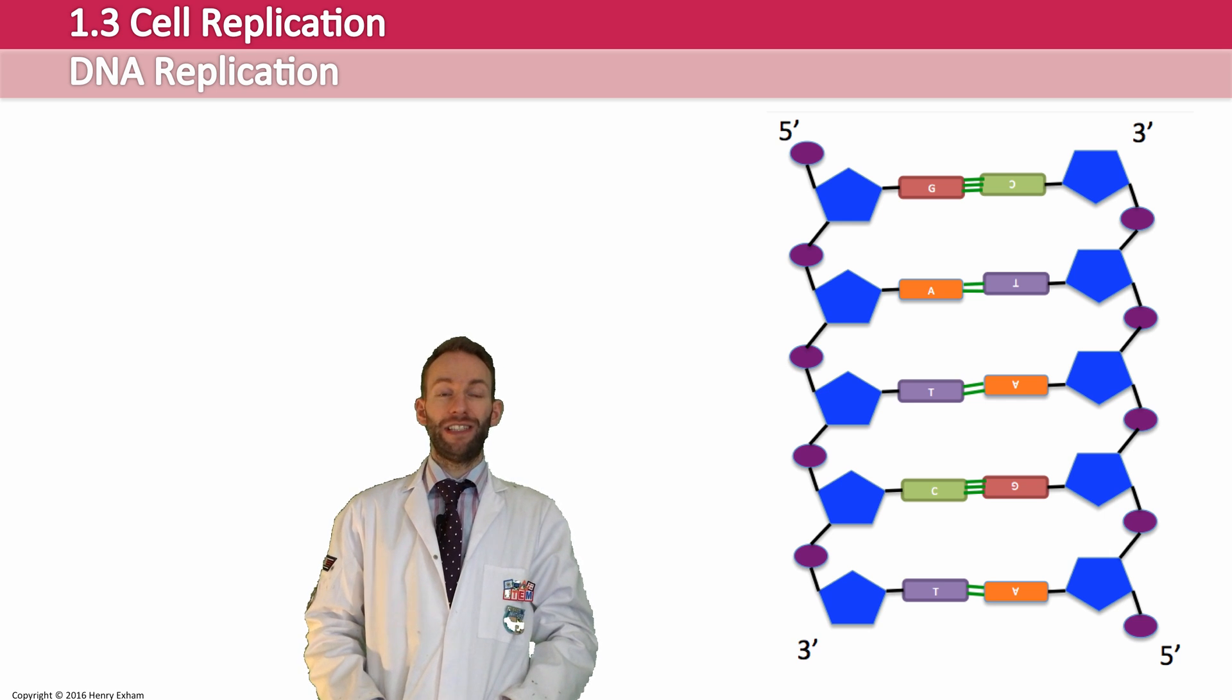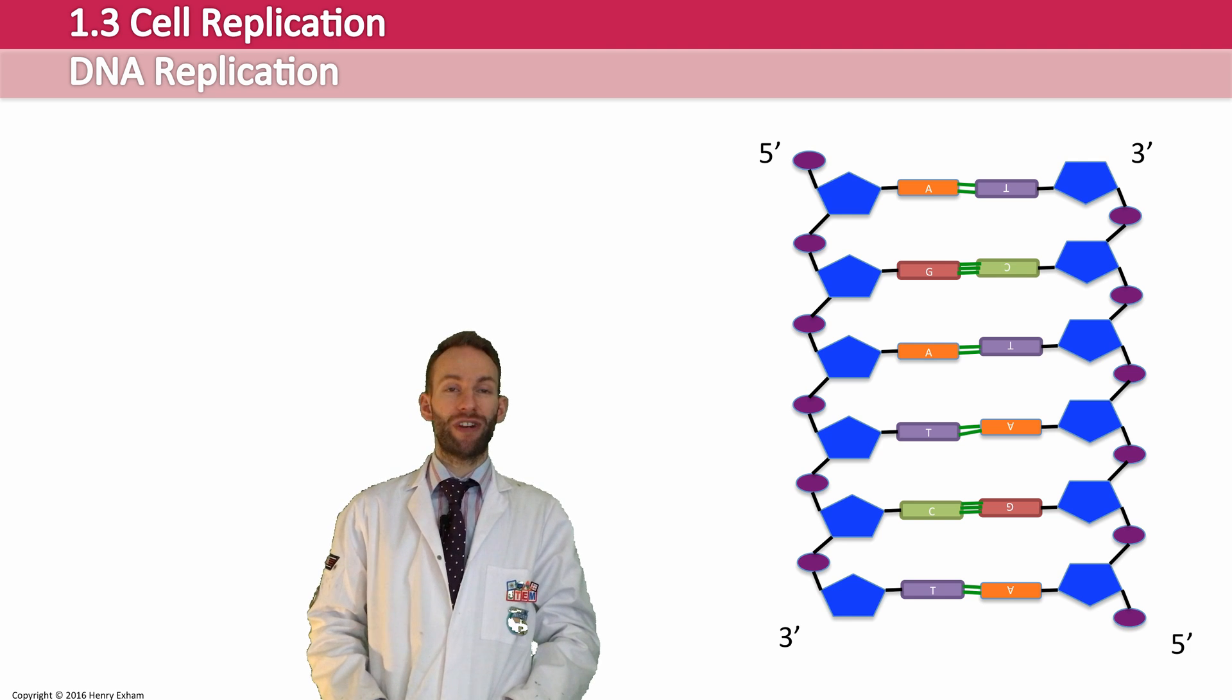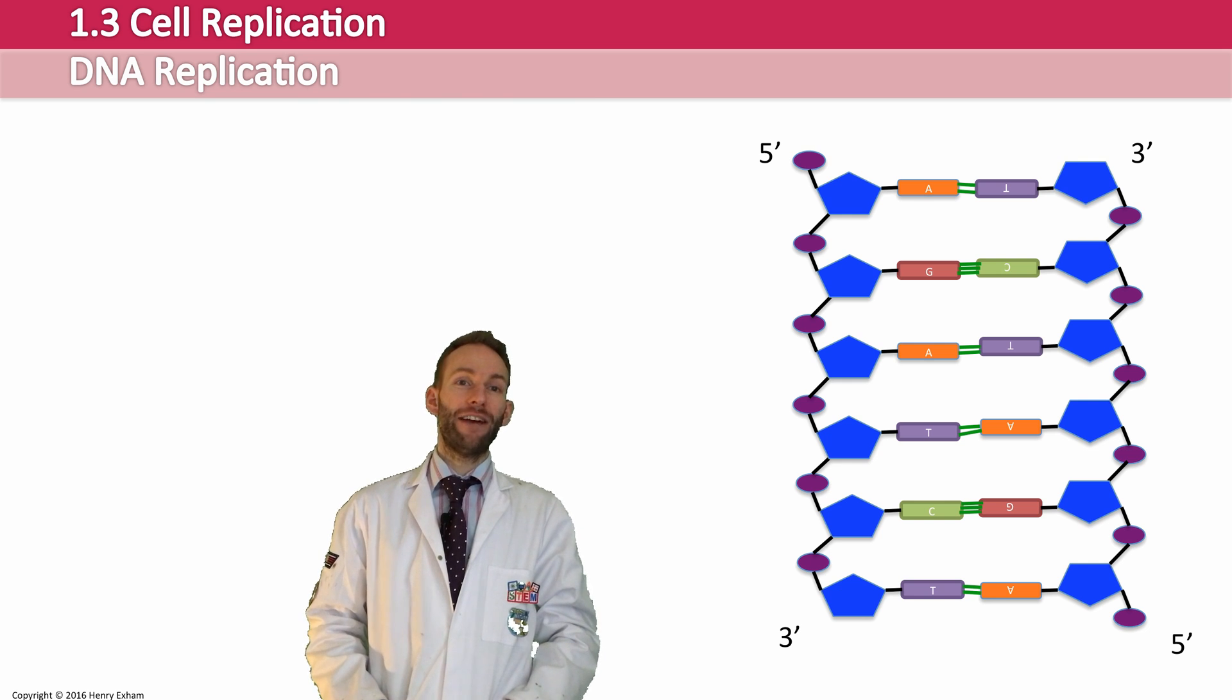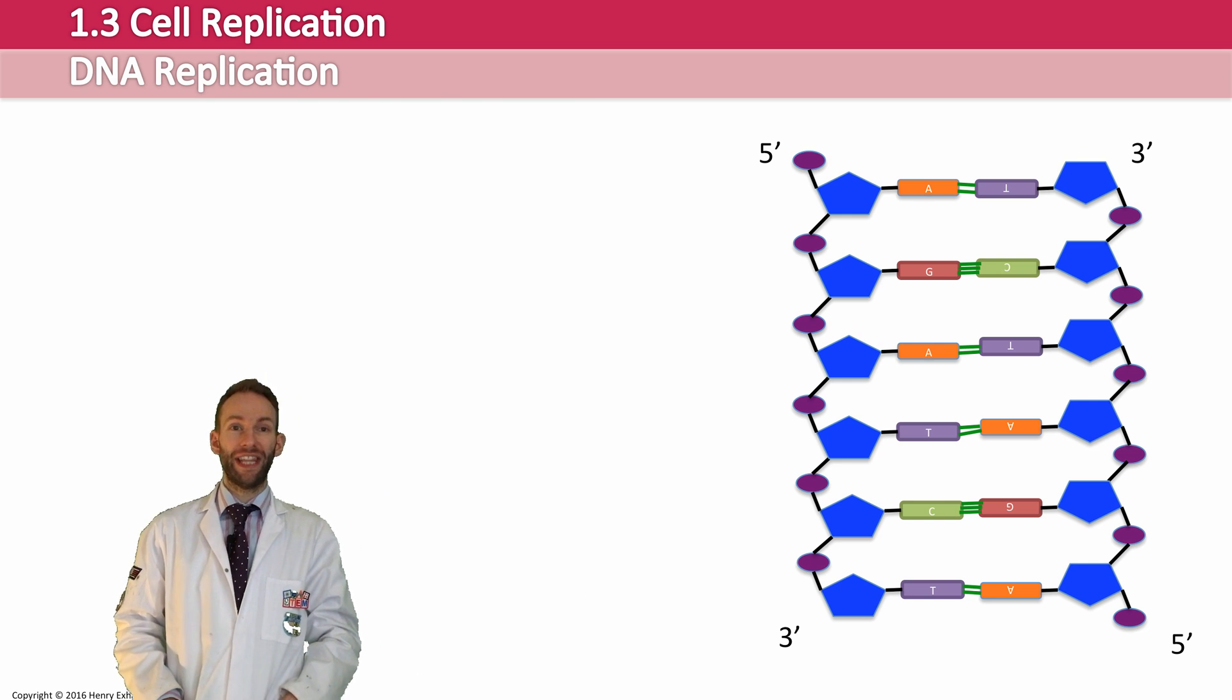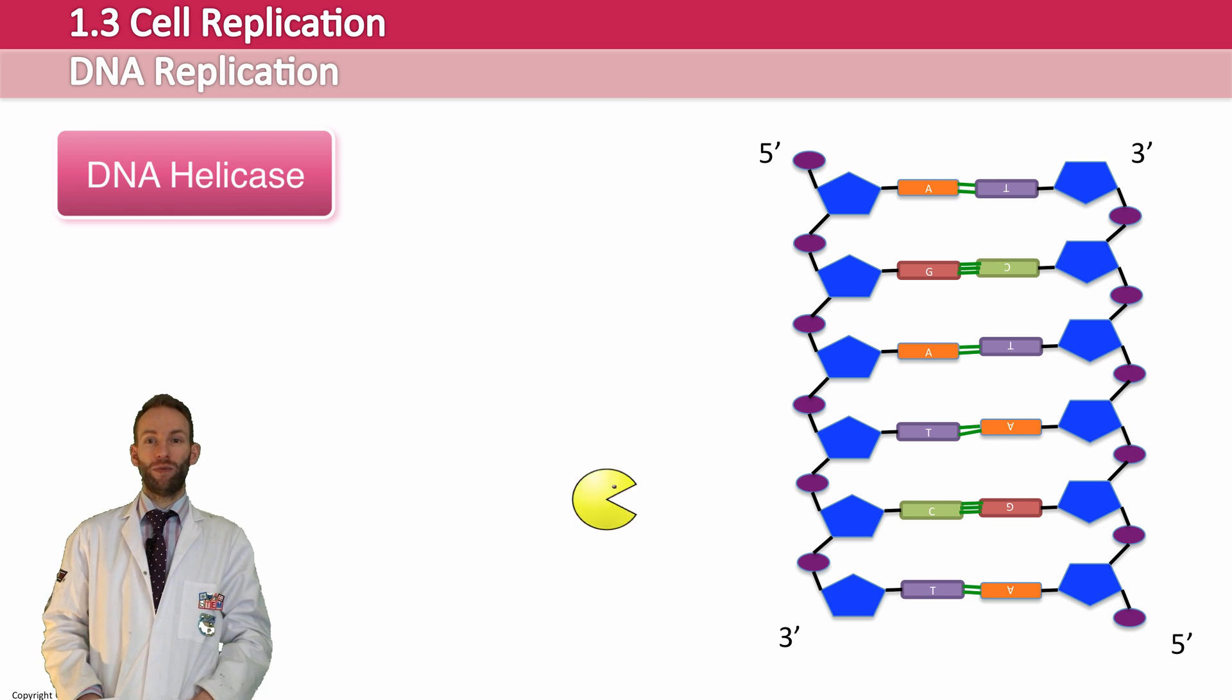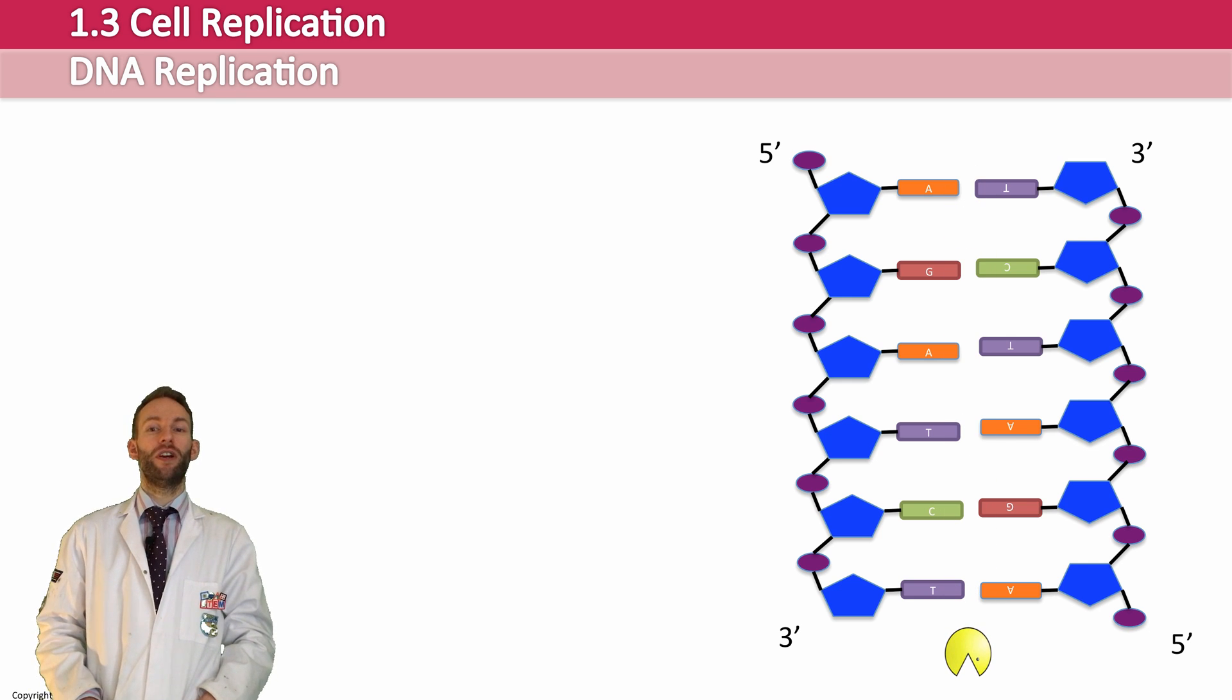Now, the first stage of DNA replication is to unwind and unzip the two strands of DNA. This is done by an enzyme. Now, there's lots of enzymes involved in DNA replication. So be careful of that, and we're going to recap them all at the end of this video. But the first enzyme we're going to talk about here is something called DNA helicase. And it will just come along and it will break those hydrogen bonds and cause the molecule to unzip down the middle.